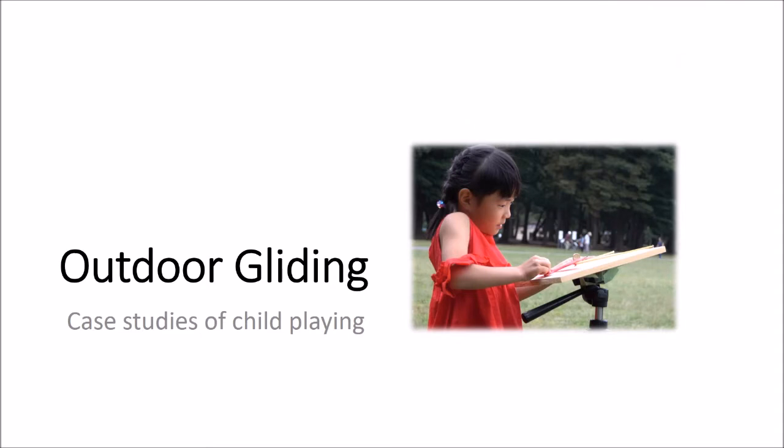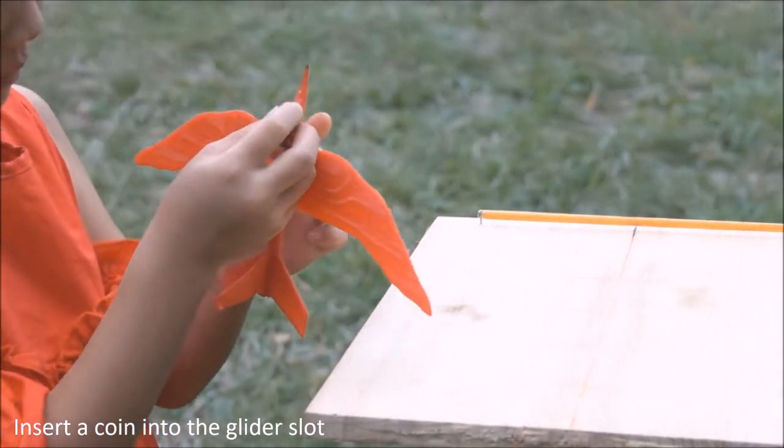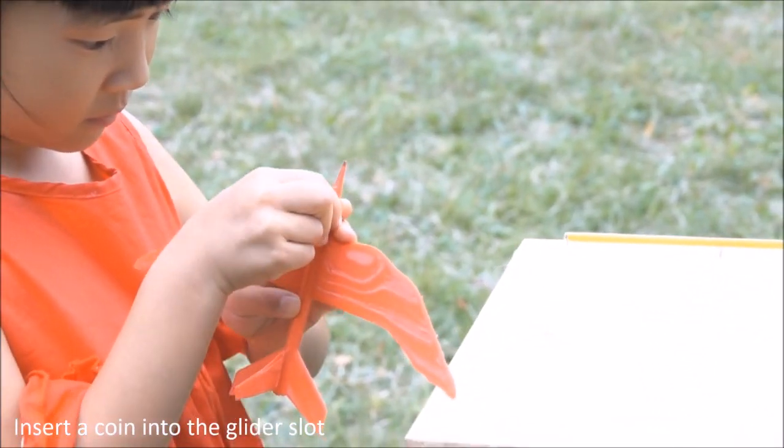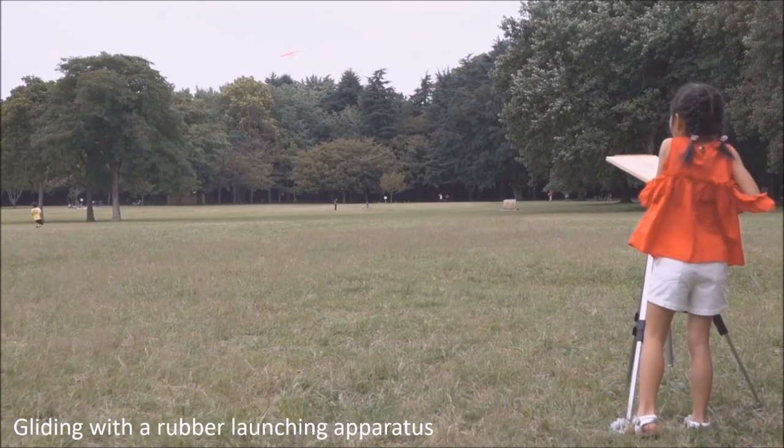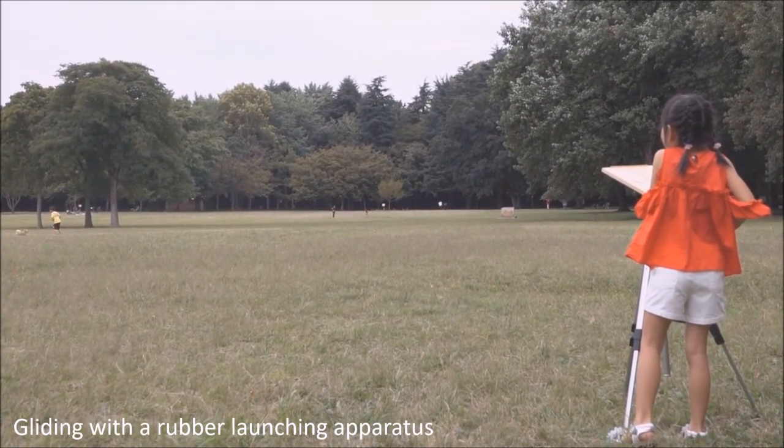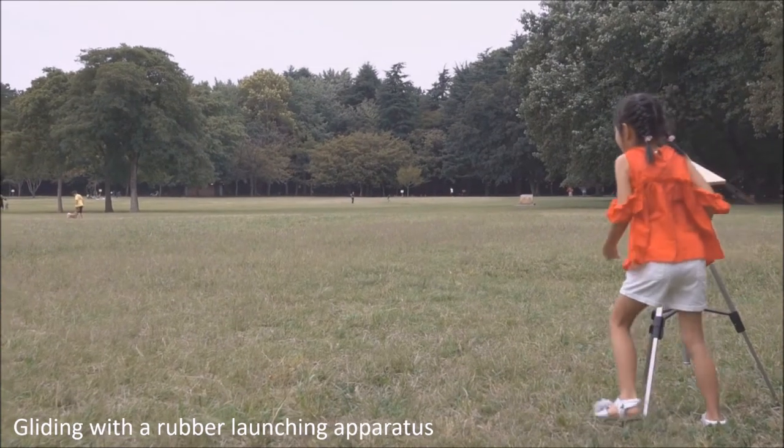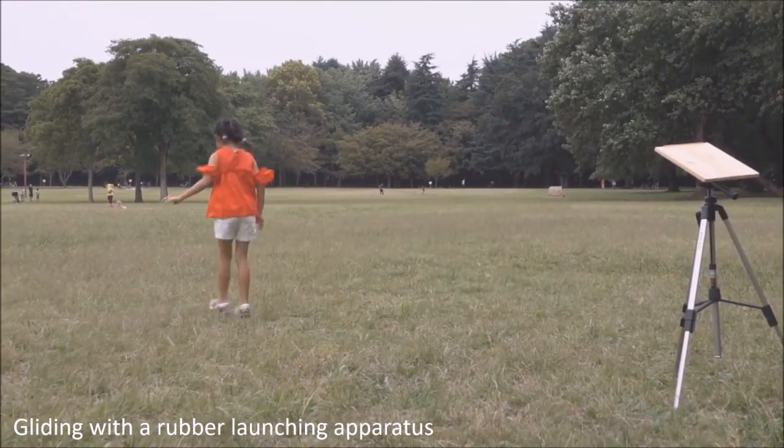Here, we show how to play with our gliders printed by a desktop 3D printer. First, the user inserts a coin into the glider slot. It is not a difficult task. Then, the user can fly the glider using a launching device. Here, the child seems happy to play with the newly designed gliders.